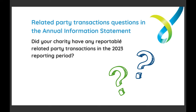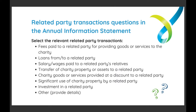How do charities actually disclose this information in the Annual Information Statement? The first thing charities will be asked is: 'Did your charity have any reportable related party transactions in the 2023 reporting period?' That's just a yes or no answer. What makes a related party transaction reportable? An example would be if a charity is paying money in exchange for a related party to supply goods or provide services to the charity — this is pretty common in the sector.